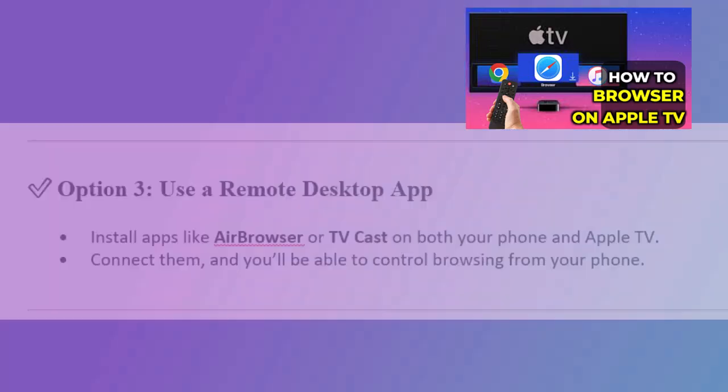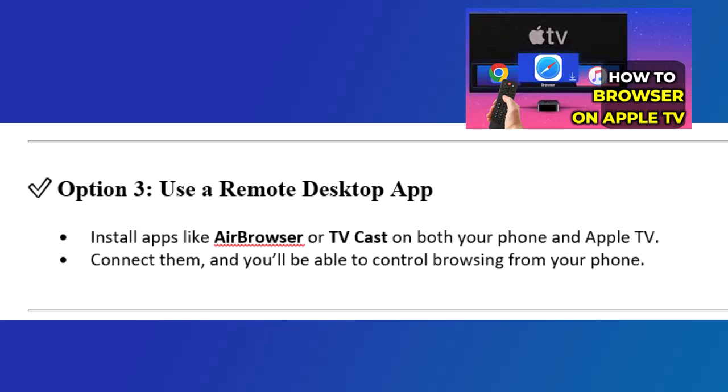Option 3: use a remote desktop app. Install apps like Air Browser or TV Cast on both your phone and Apple TV. Connect them, and you'll be able to control browsing from your phone.